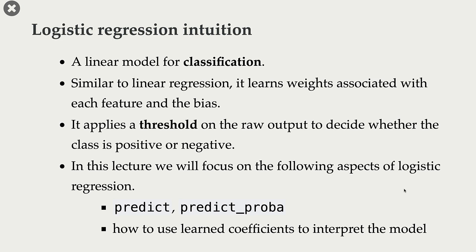Similar to linear regression, logistic regression learns weights or coefficients associated with each feature and the bias term. In the case of linear regression, how do we calculate predictions? Given a new example, we calculate this weighted sum of the feature values of this new example, we add the bias term to it, and that's our prediction. Can we use this same score, this same idea for classification problems?